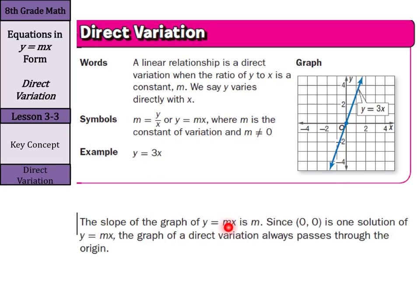The slope of this is the m. That is our rate of change. That is our slope. Since 0, 0 is one solution of y equals mx, the graph of a direct variation always passes through the origin here.